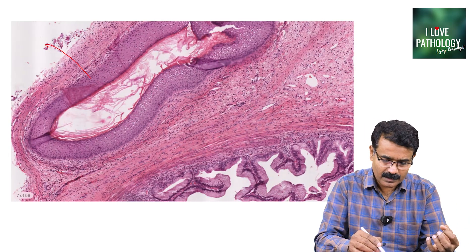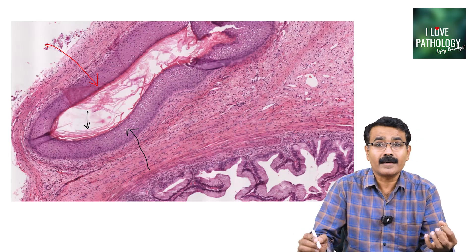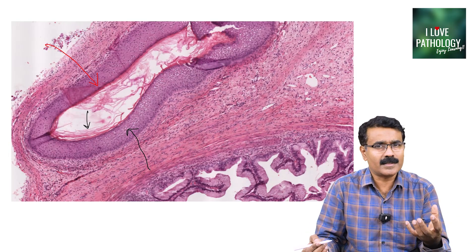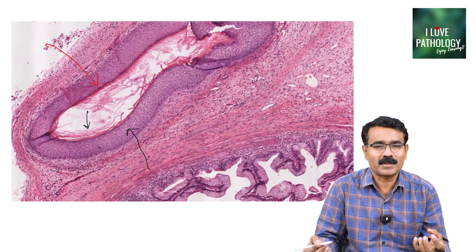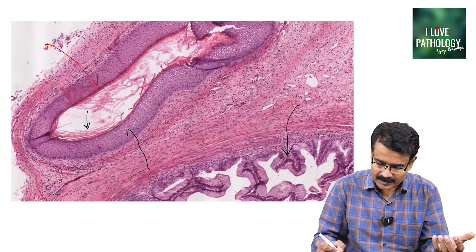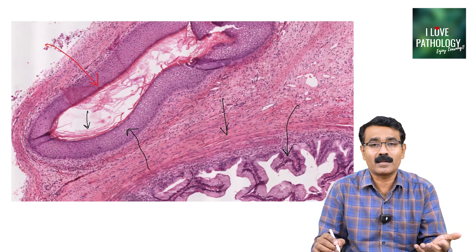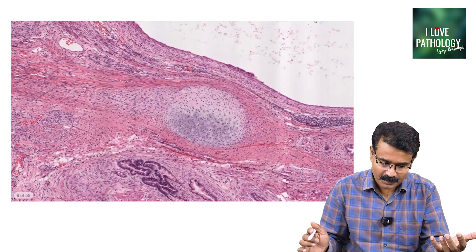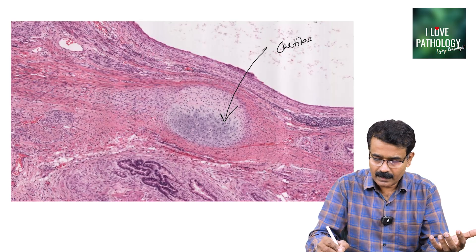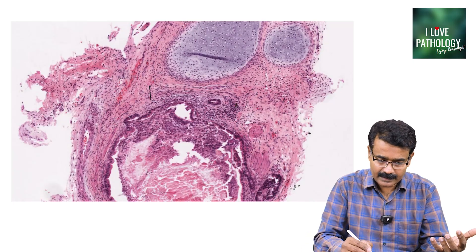Let us see how it looks in the histopathology slide. This is your stratified squamous epithelium. You can find keratin debris in the lumen of the cyst — that is why the cyst content is usually pultaceous, containing sebum and keratinous debris. Beneath that is glandular epithelium, and in between are spindle cells — the stromal or mesodermal elements. That is the cartilage element, and this is the glandular element.